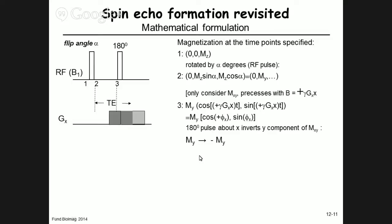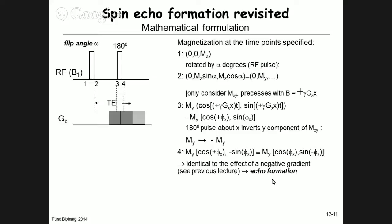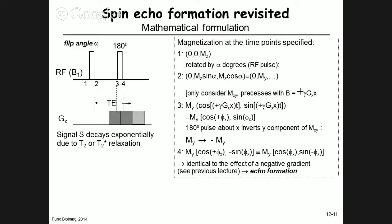The magnetization at position 4 equals that at position 3 except the Y component is inverted, written as M_Y × cos(φ_x), sin(−φ_x). This is identical to the effect of a negative gradient, and therefore produces an echo — because −φ_x makes the first period act as if it were rotated by −φ_x, and then the continued gradient rotates in the opposite direction, achieving rephasing.